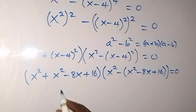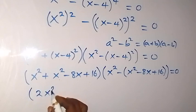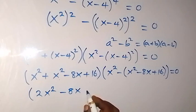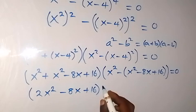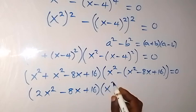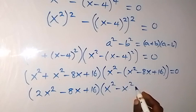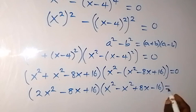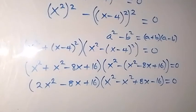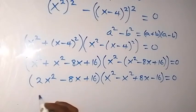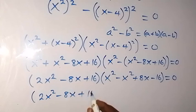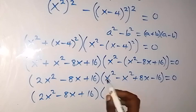In the next step, x squared plus x squared gives us 2x squared, then minus 8x, then plus 16. For the second bracket: x squared minus x squared gives 0, plus 8x, minus 16, equals 0. So we have 2x squared minus 8x plus 16, and the second bracket becomes 8x minus 16, equal to 0.